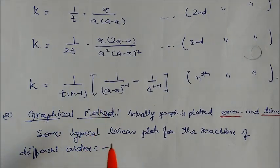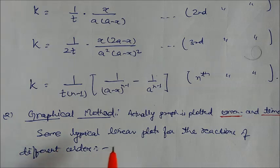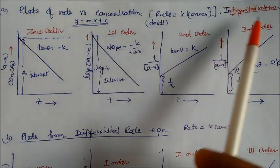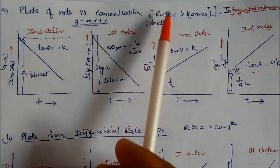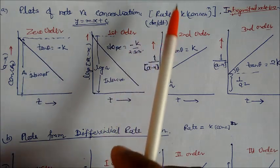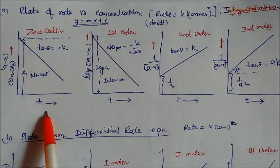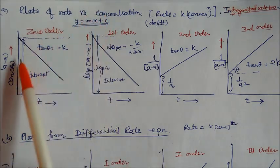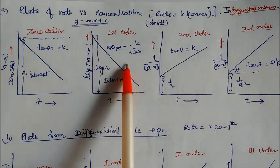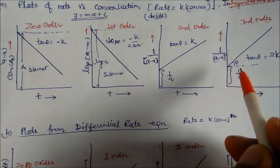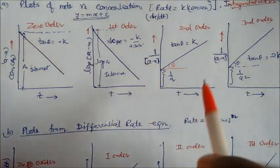The second method is the graphical method to determine the order of reaction. We plot concentration versus time. For the rate equation, rate equals k times concentration to the power n, which can be rearranged to a linear form y equals mx plus c. For zero order, a plot of concentration vs time gives a downward slope; for first order, downward slope with intercept; for second order, a positive slope.